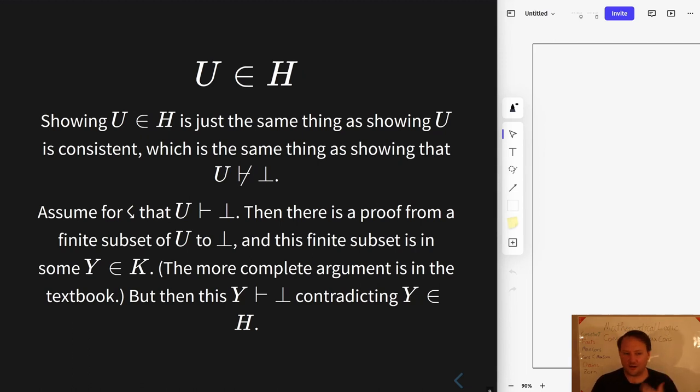Now that finite subset of U, you can take any element. After all, U just is the union over the chain. So you take one of the elements from this finite subset, it's in some element of the chain. You take the next element in U, or the finite subset of U, it's another element in the chain. So on and so on and so on.